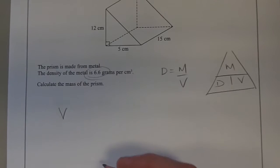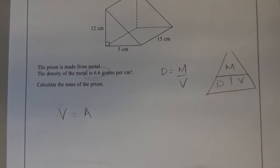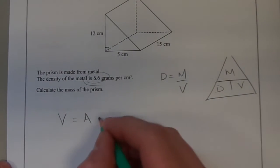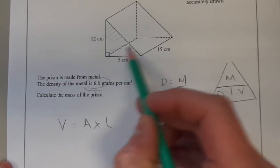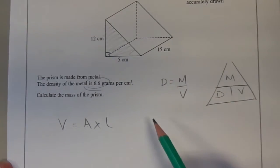The volume of a prism is equal to the area of the cross-section multiplied by the length. The area of the cross-section is the area of this triangle, which is repeated all the way down the prism. The length of this prism is 15.